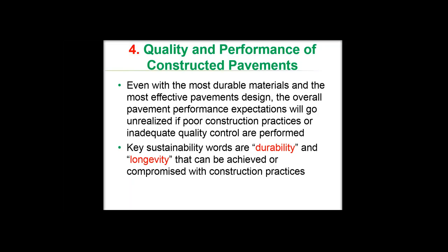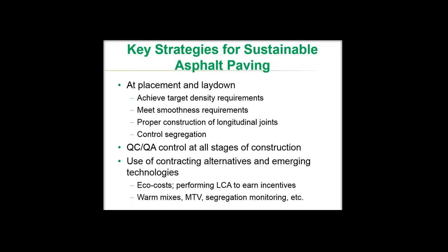The last link between construction quality and pavement sustainability is construction quality itself. Key sustainability factors for construction quality are durability and longevity, which can be achieved or compromised by construction practices. Key strategies for sustainable asphalt paving are simple and don't require special equipment — paying attention to details during placement, laydown, and quality control, using contracting alternatives to incentivize contractors, and employing emerging technologies such as warm mixes, material transfer vehicles to reduce segregation, and thermal cameras for segregation monitoring.